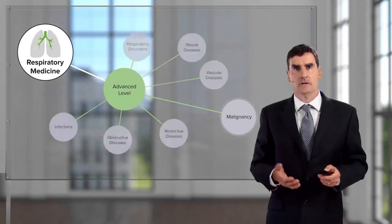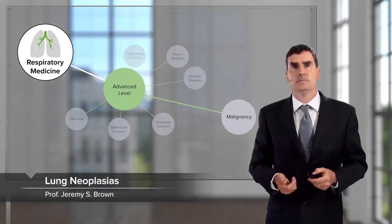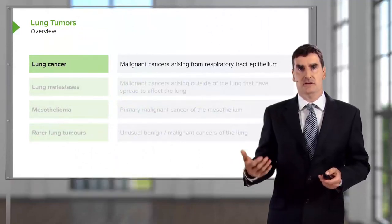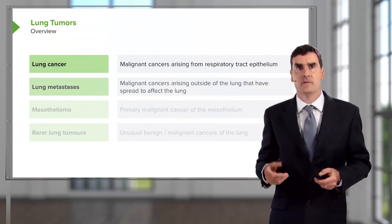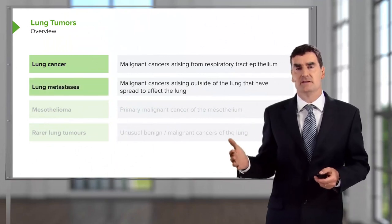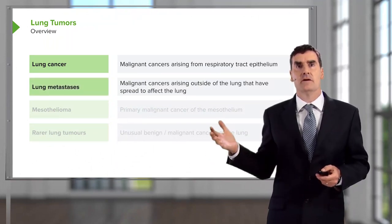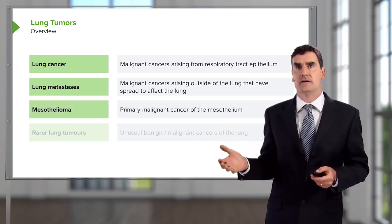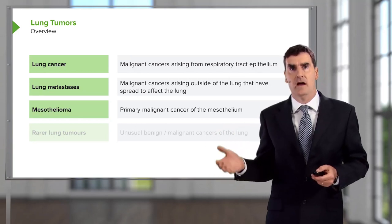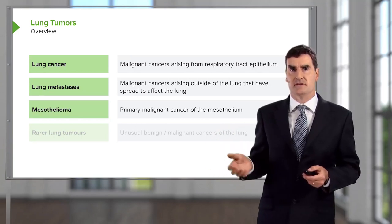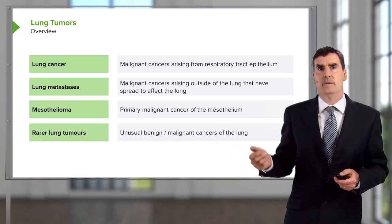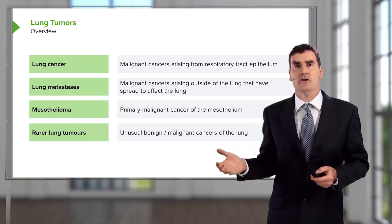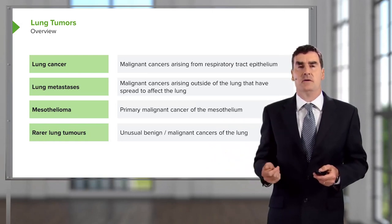The subject of this talk is lung cancers and lung tumors — specifically lung cancer itself, which is a malignant cancer arising from respiratory tract epithelium, but also lung metastases, that is secondary cancers spread from elsewhere in the body to reach the lung, mesotheliomas, which is a primary malignant cancer of the mesothelium particularly associated with asbestos exposure, and a little bit about rarer lung tumors, which are small, benign or semi-malignant tumors, sometimes identified by radiology.